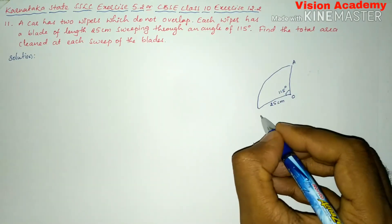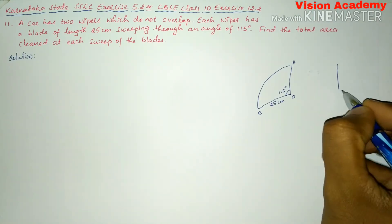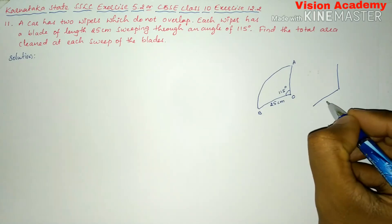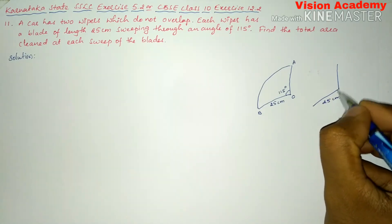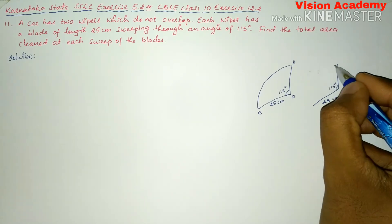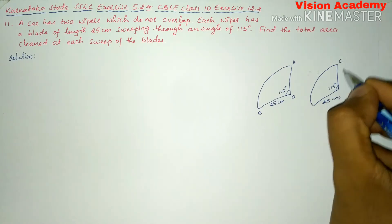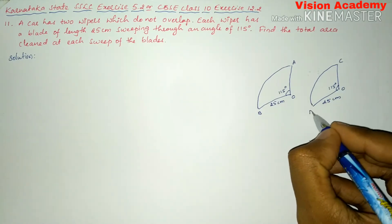And another wiper with the same length that is 25 cm with the same degree 115. We will write here this one as C, O, D.